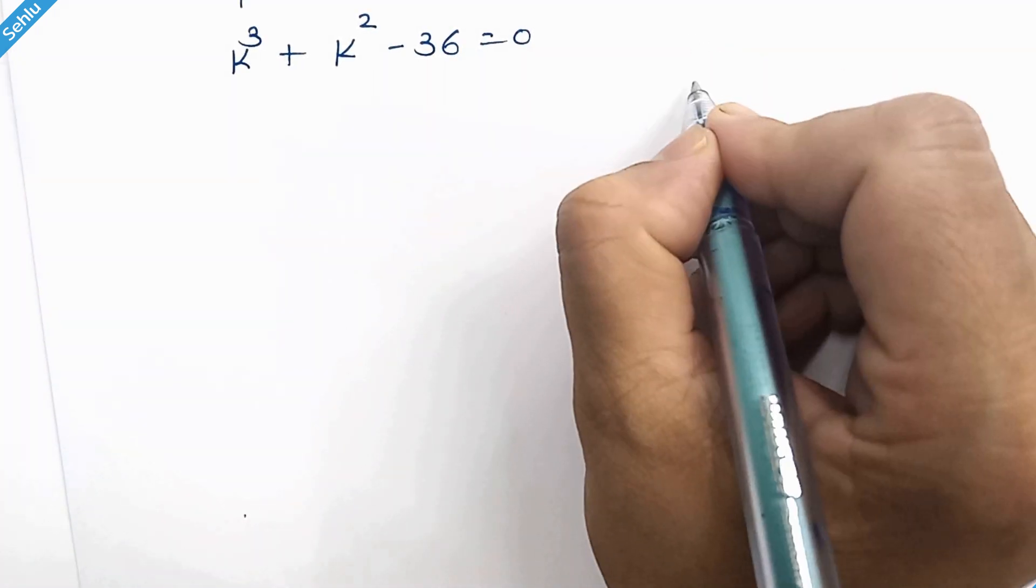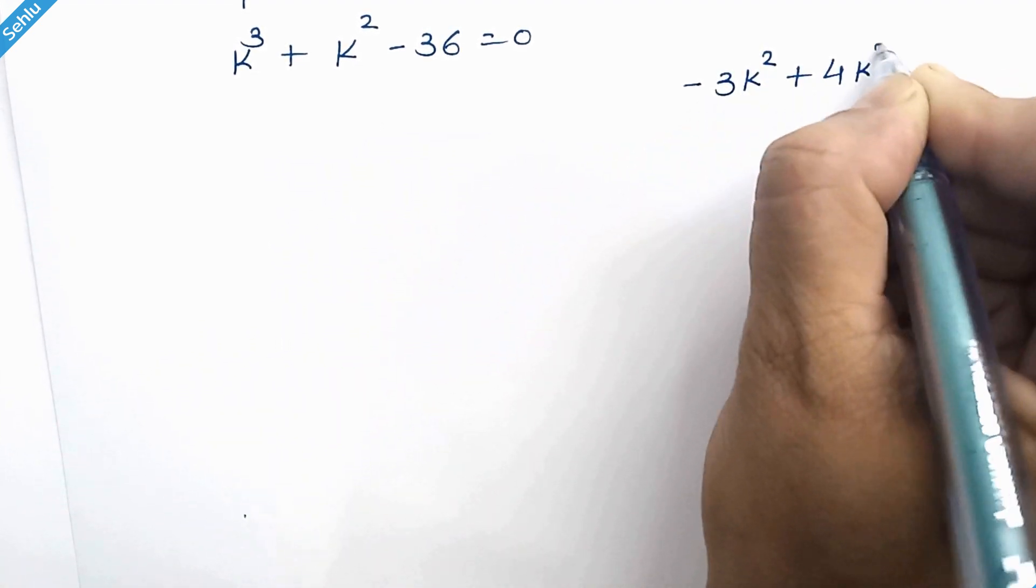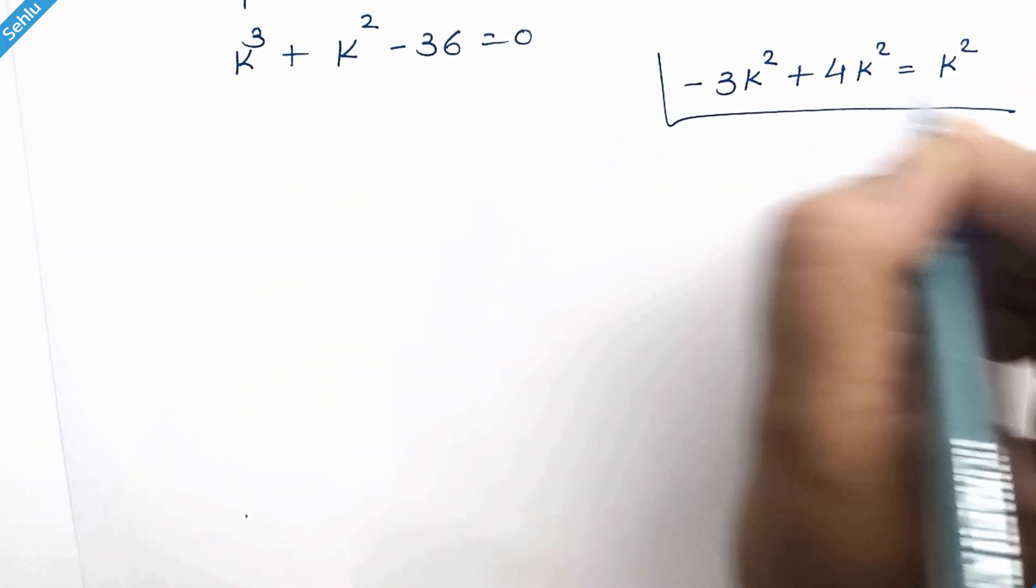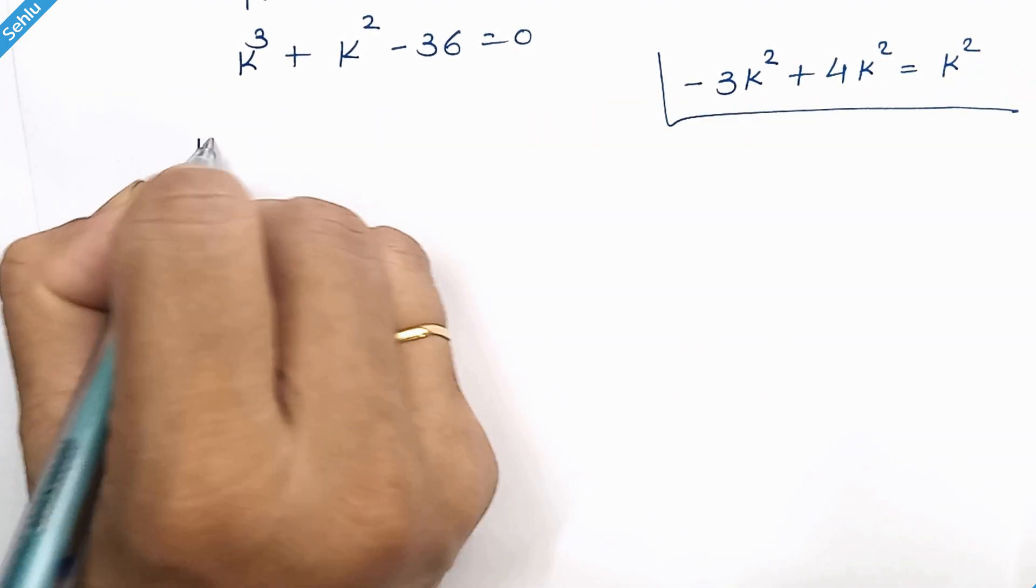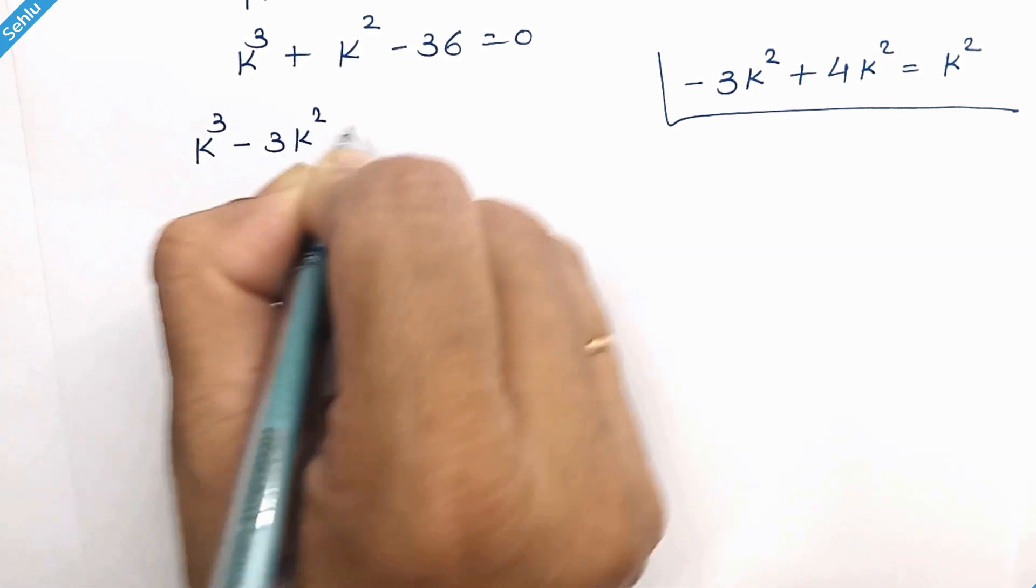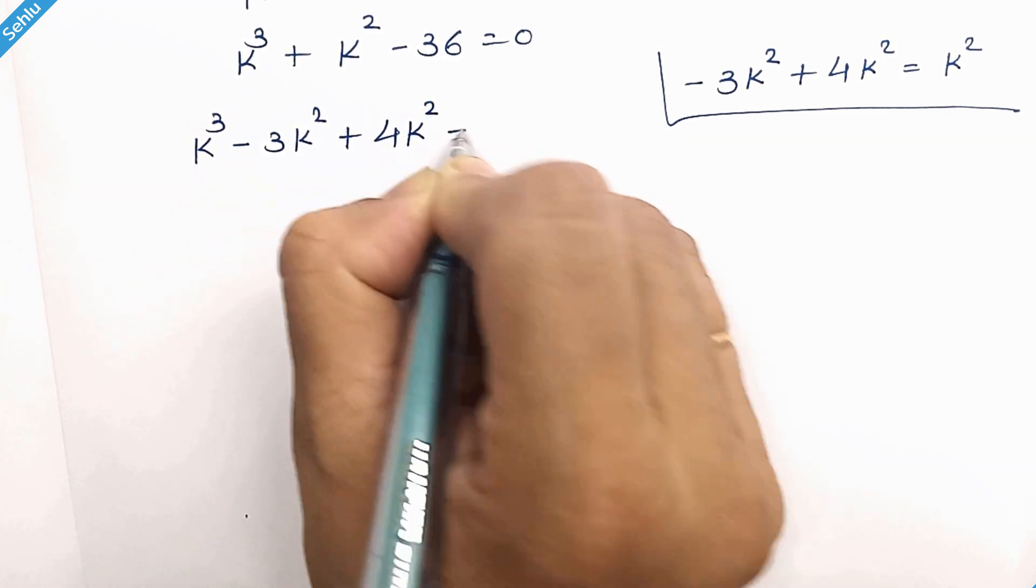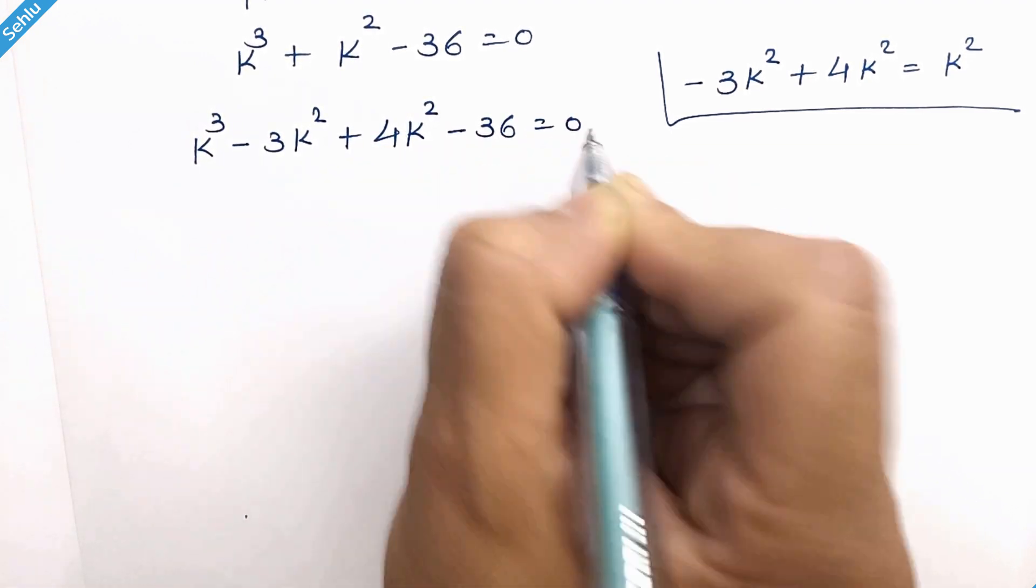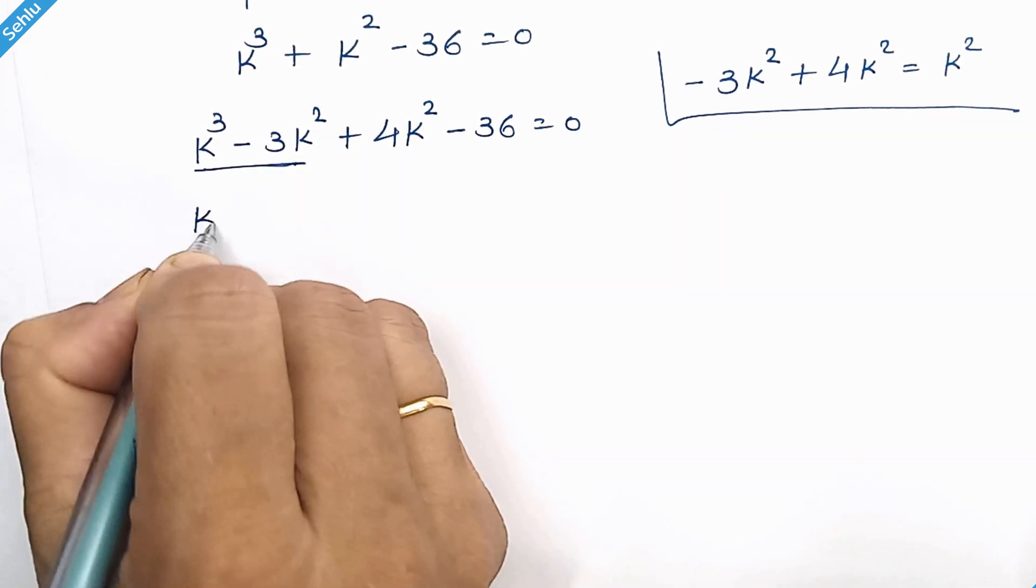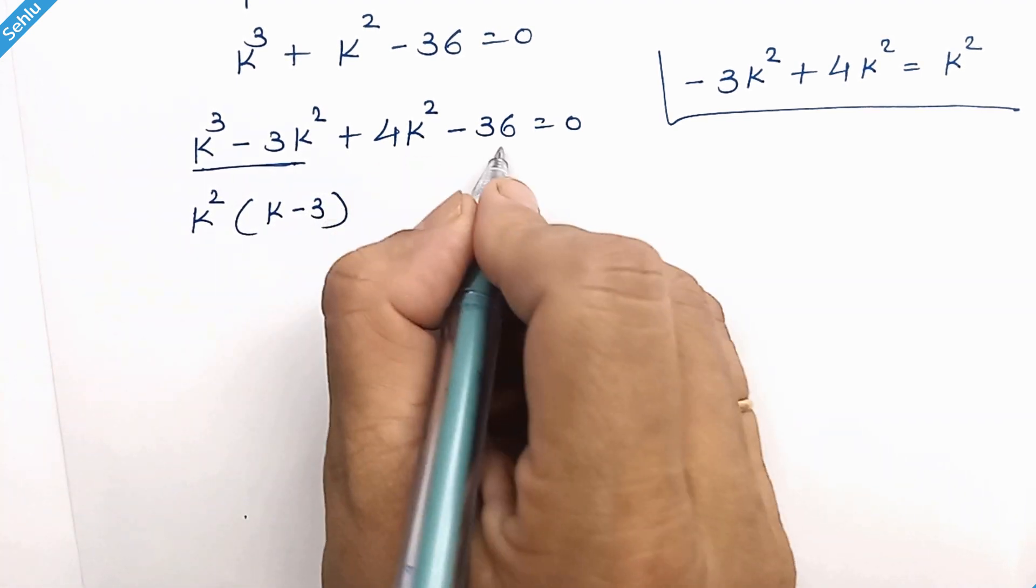We can write negative 3k square plus 4k square instead of k square. So the equation will be k cube minus 3k square plus 4k square minus 36 is equal to 0. Factor out k square from here and 4 from here.